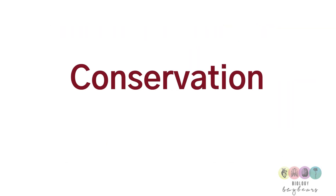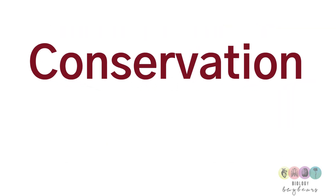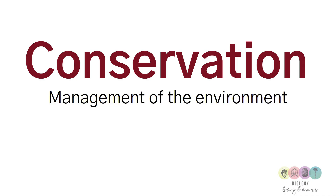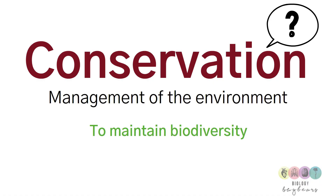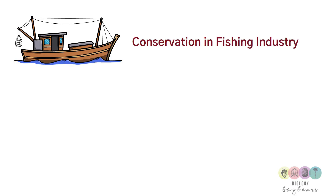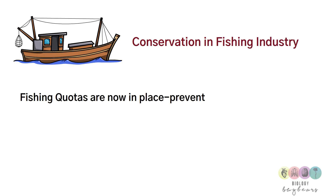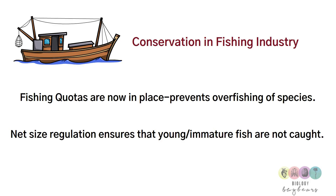Conservation is defined as the management of the environment. It is important to maintain biodiversity and to prevent species from going extinct. A conservation practice example is conservation in the fishing industry: fishing quotas are now in place to prevent overfishing, and net size regulations ensure young or immature fish are not caught and have a chance to reach maturity.